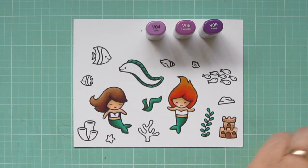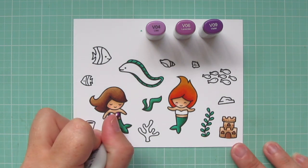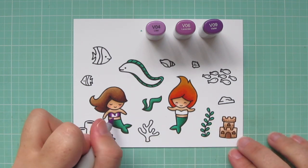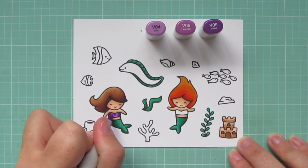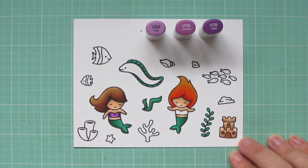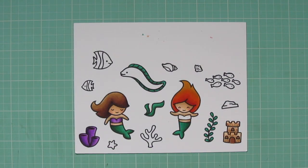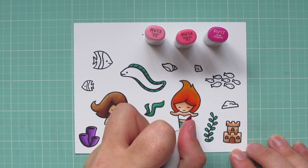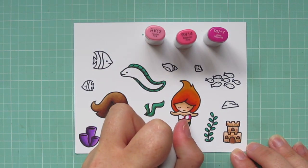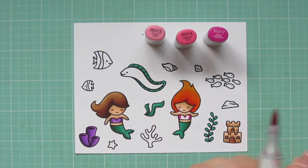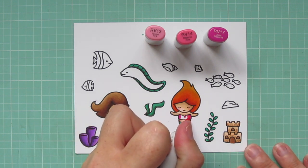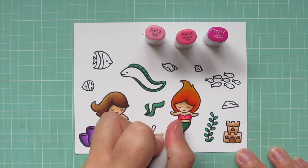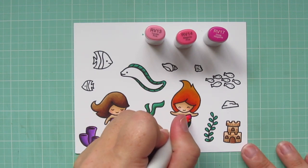And then for her little bikini top, I'm using V04, V06, and V09. Just blending from the outside toward the center, with each of those shades darkest to lightest. And then the redhead mermaid, I'm going to give her a bright pink bikini top. So I'm using RV13, RV14, and RV17 for that. And I did also do just a little bit of darkness in the center to kind of accentuate that.